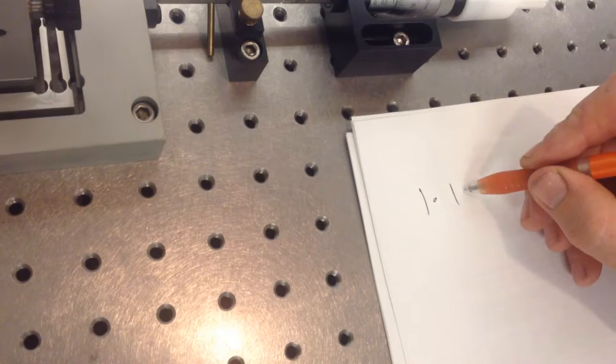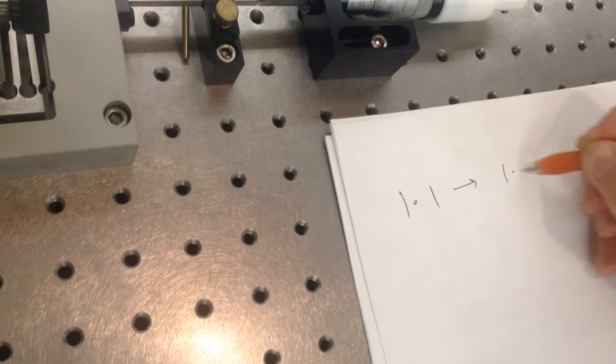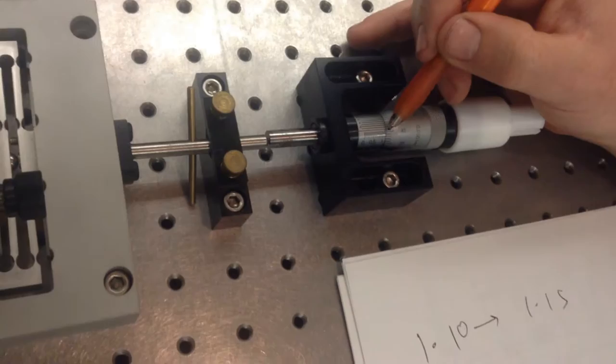It's somewhere between 1.1 and 1.15. So 1.10 and 1.15. Because I can tell. I mean, I'm a little bit past the 1.1 tick. The next tick will be a short one. That'll be 1.15. Okay, so how much farther am I?